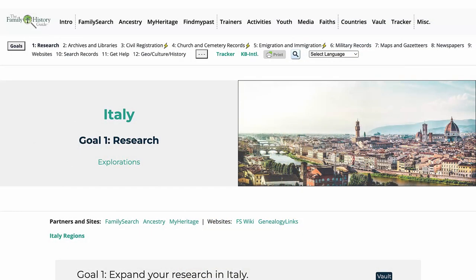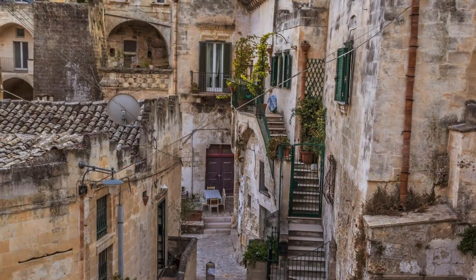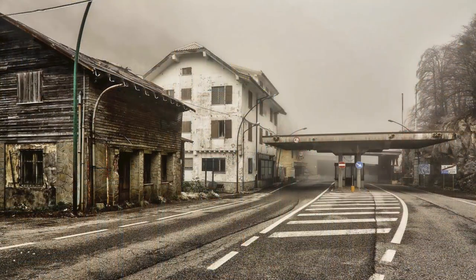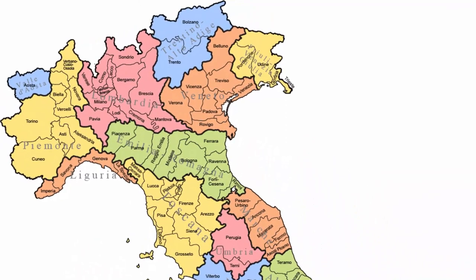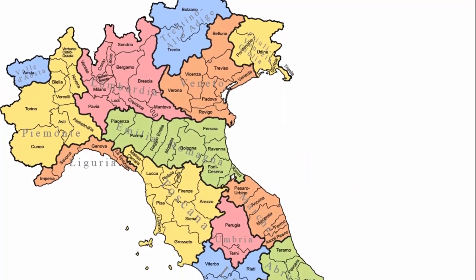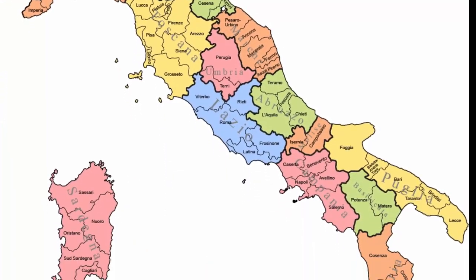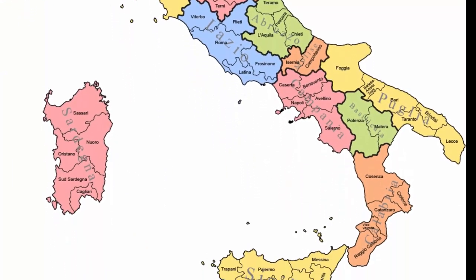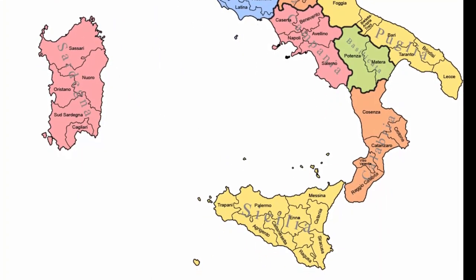The Family History Guide has the best content and organization for learning about Italian records. All genealogical records are tied to the location where the records were created, and boundary changes affect how you find the records. In Italy, historically, records were and are kept in a system of jurisdictions. A jurisdiction is a geographic area over which a state, county, or other division of the country has an administrative responsibility to collect information.